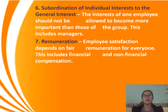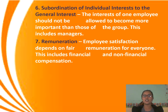Number five, unity of direction: teams with the same objective should work under one manager using one plan to ensure actions are properly coordinated. Number six, subordination of individual interest to the general interest: the interest of one employee should not become more important than those of the group, including managers. Number seven, remuneration: employee satisfaction depends on fair remuneration for everyone, including financial and non-financial compensation.